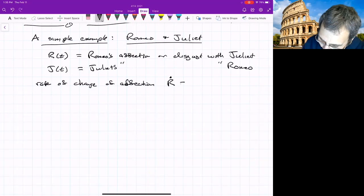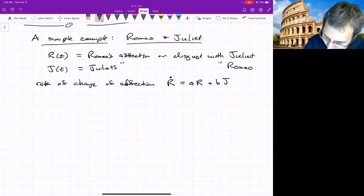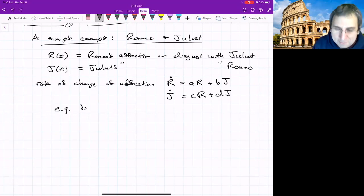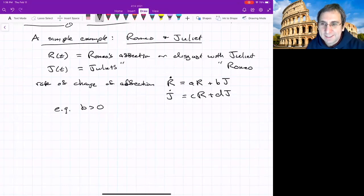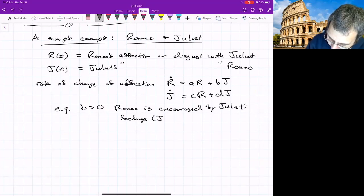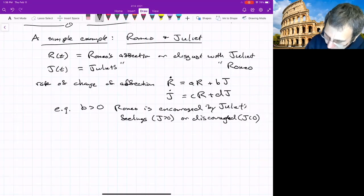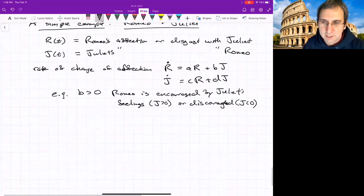So R dot is A R plus B times J. And then J dot is C R plus D times J. A, B, C and D are all parameters. If B is greater than zero, then that means Romeo is encouraged by Juliet's feelings. I guess that would be only if J is greater than zero or discouraged if J is less than zero and so on. So I kind of get the idea.